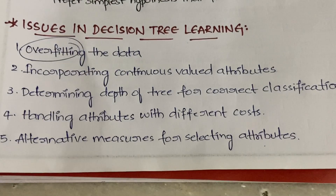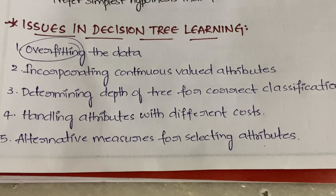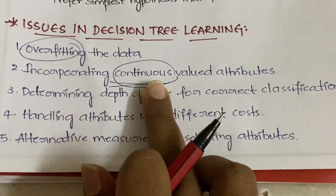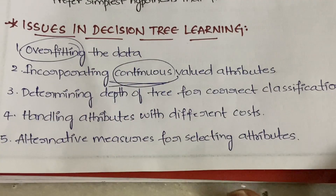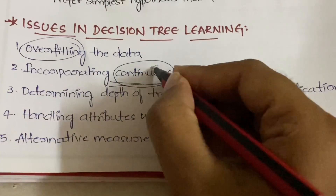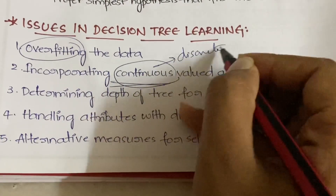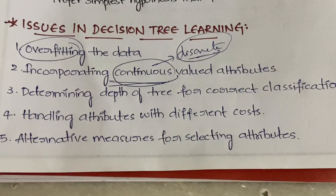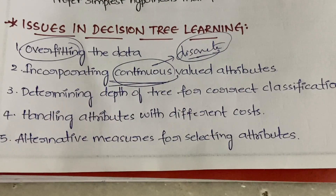The second issue is incorporating continuous valued attributes. Decision trees require discrete values and cannot directly accommodate continuous values. If you want to use continuous values, you need to first convert them into discrete values and then apply the algorithm, which makes the process lengthier.